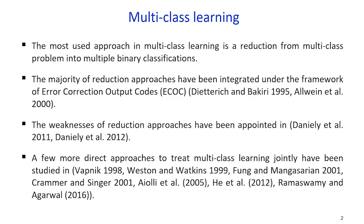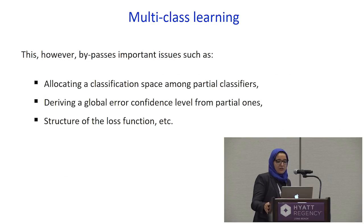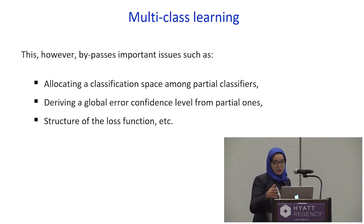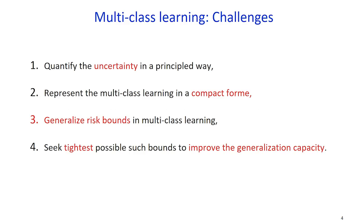The most used approach in multi-class learning is a reduction from the multi-class problem into multiple binary classifications. Two families of decomposition are generally used: one-versus-one or one-versus-all. The weaknesses of reduction approaches have been noted, and a few more direct approaches to treat multi-class simultaneously have been studied. However, this leaves unresolved fundamental issues such as coordinated allocation of the multi-class classification space among partial classifiers, derivation of a global error confidence level from partial ones, and accounting for the structure of the loss function. Our work takes an opposite stance and attempts to treat multi-class jointly.